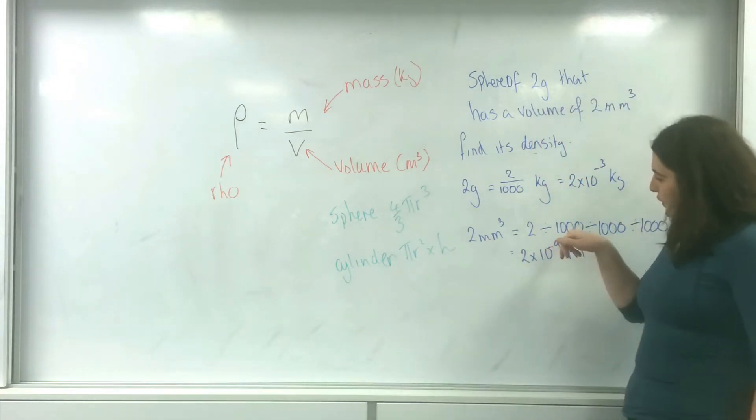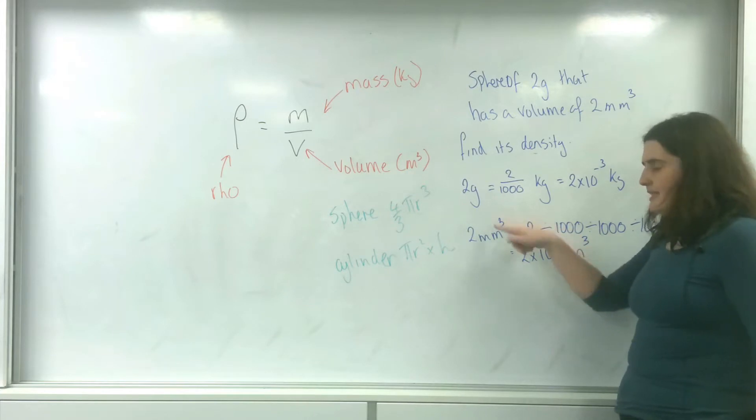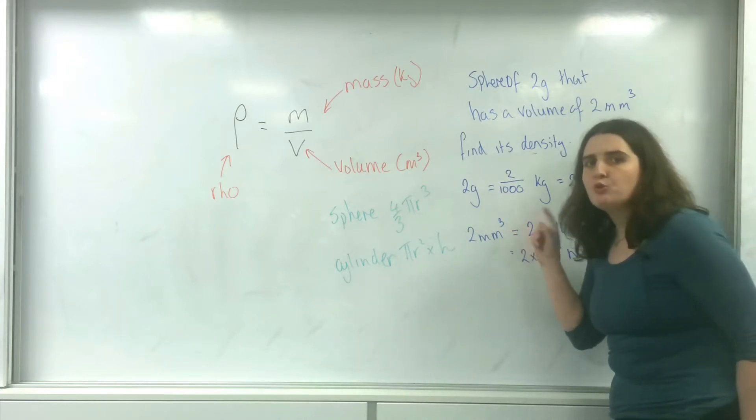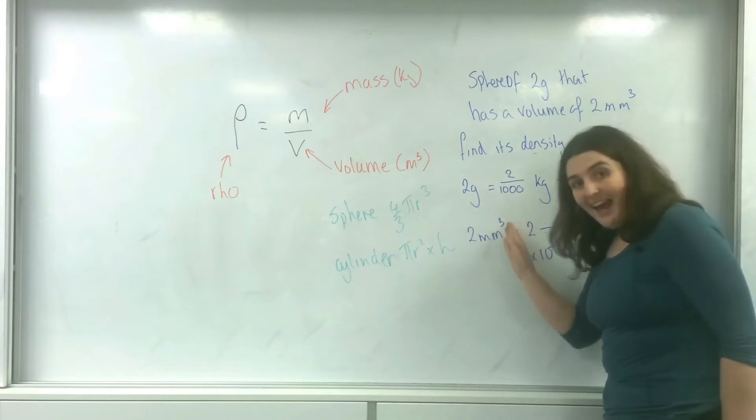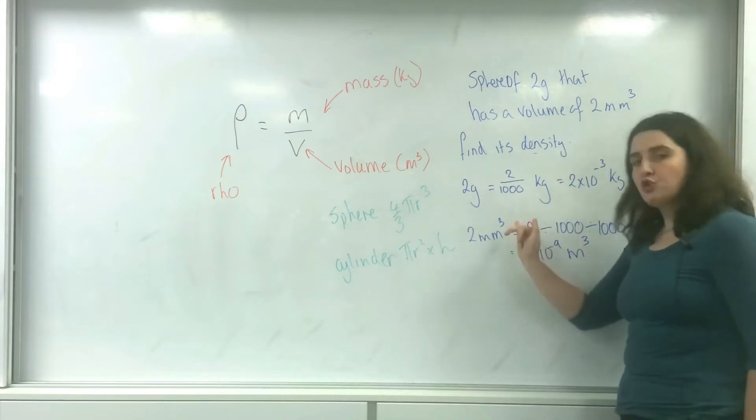How I did that was I had to divide it by 1,000, and this power here will tell me how many times to do it. So if this was millimeters squared, I would divide it by 1,000 two times.